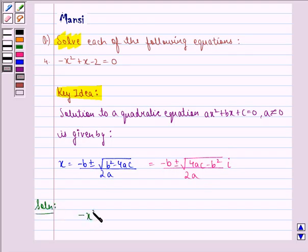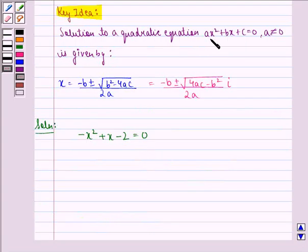The equation given to us is -x² + x - 2 = 0. If we compare this equation to the quadratic equation ax² + bx + c = 0,